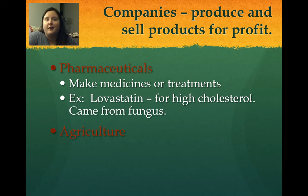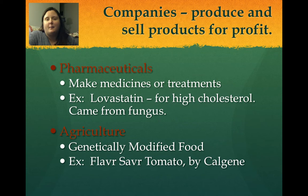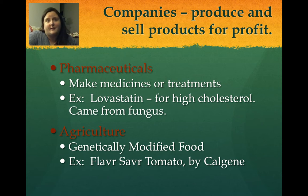Agriculture is another major industry that uses biotechnology. The agriculture industry has genetically modified food — an example is the Flavor Saver tomato, produced by Calgene in the early 1990s, which didn't ripen as fast. Previously, tomato companies had to cut tomatoes off the vine early while still green to ship them, then gas the tomatoes with ethylene to ripen them at their destination.